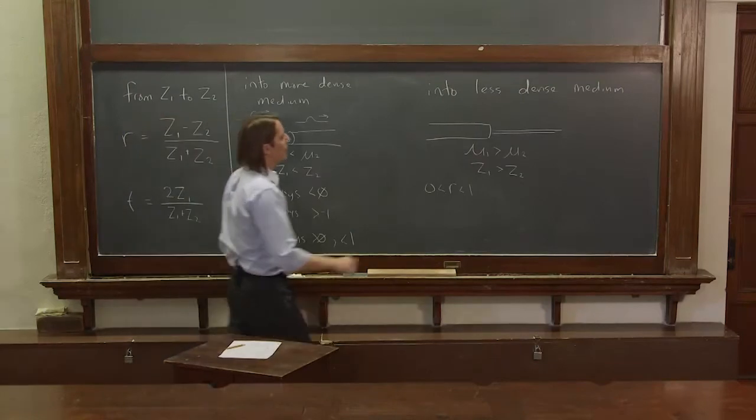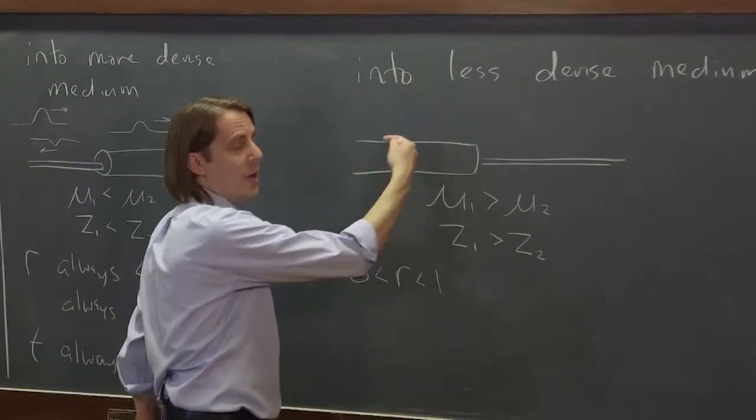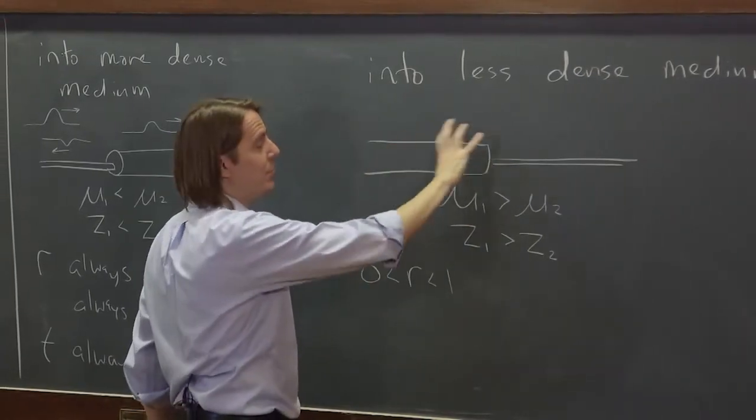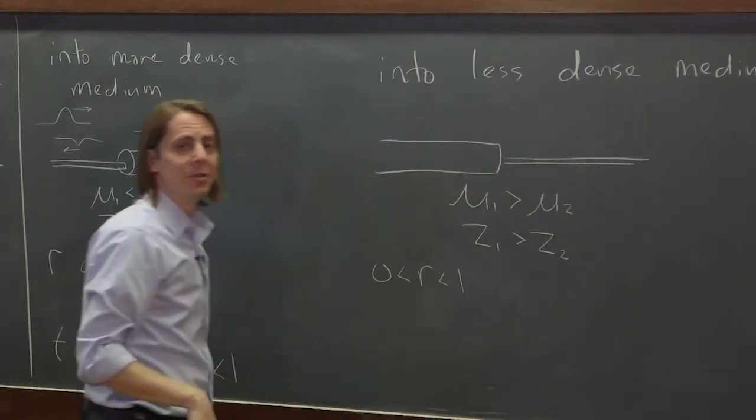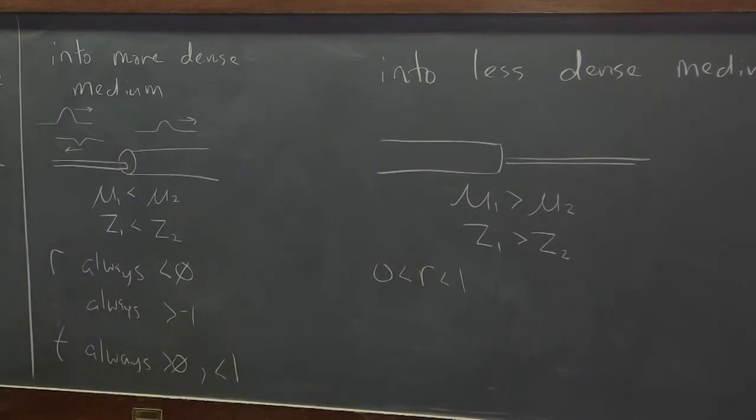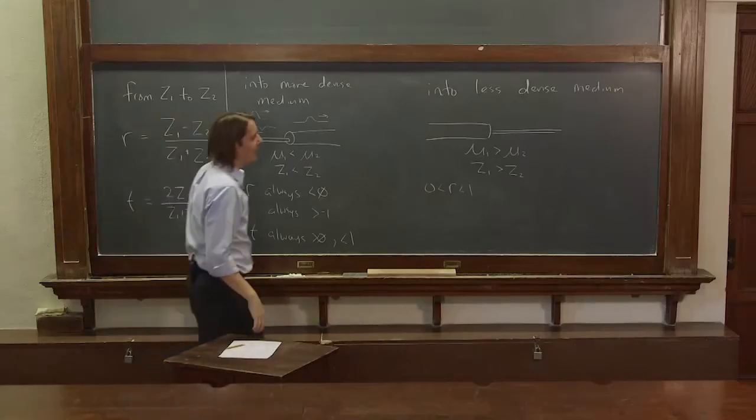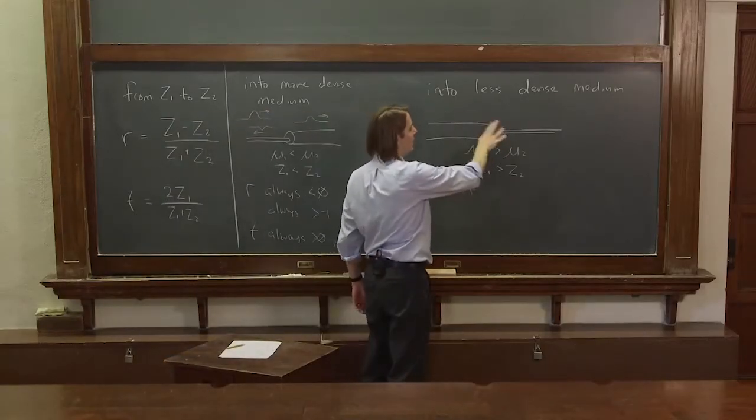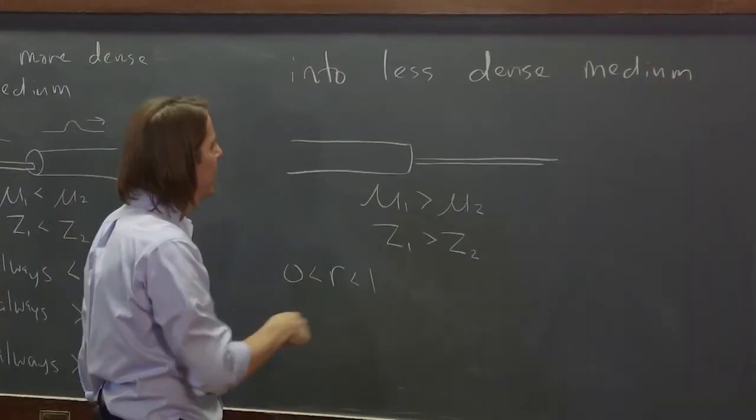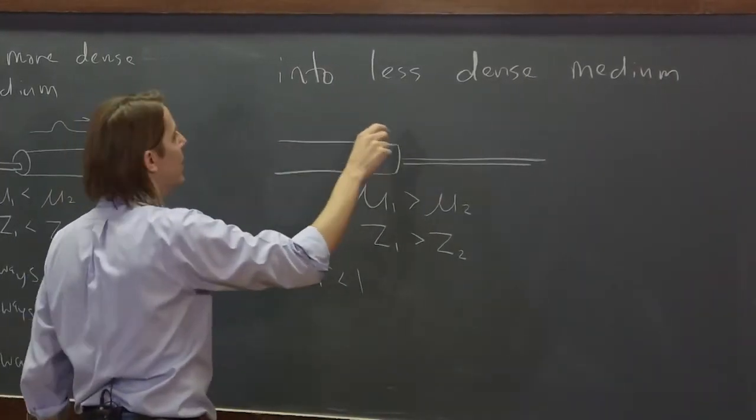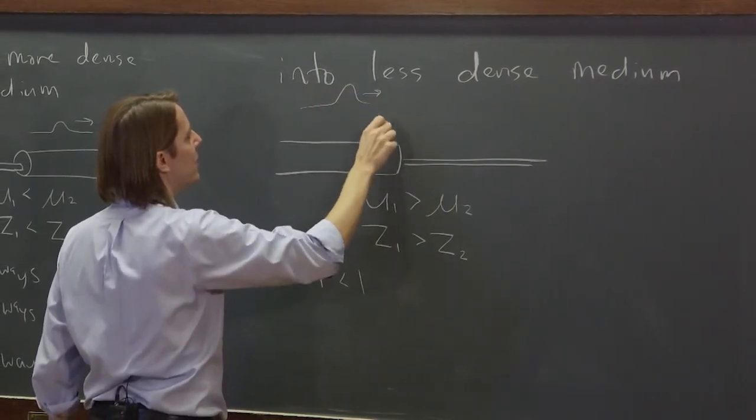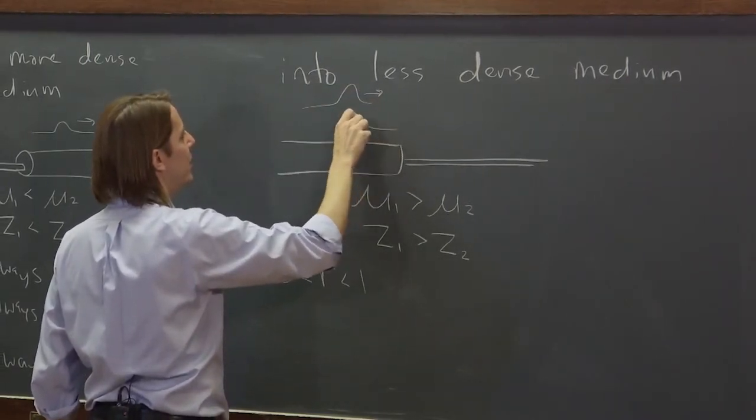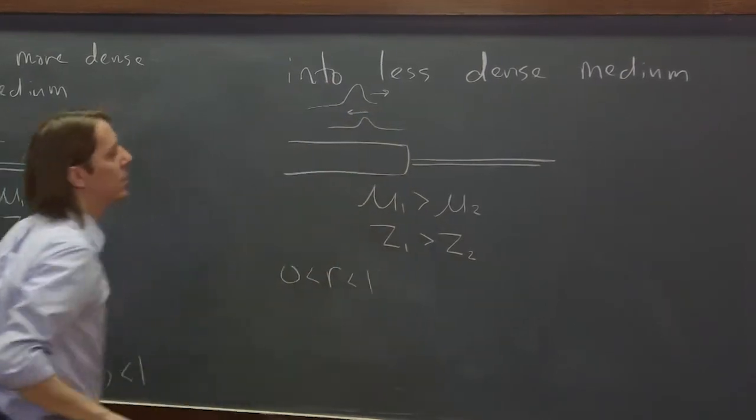So whatever reflection you get back will actually be upright, and it won't be as big as the original pulse. You'll always lose a little bit of energy because you'll always give some to the little string. That's what we'll see when we do t in a minute. But it can't ever be bigger because then you would actually gain energy. Of course, you can't do that. So if we were to draw that case, if you have a little pulse going in, it's going to come back upright, but usually a little bit smaller.